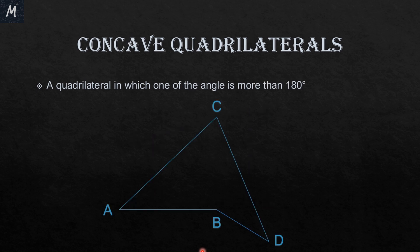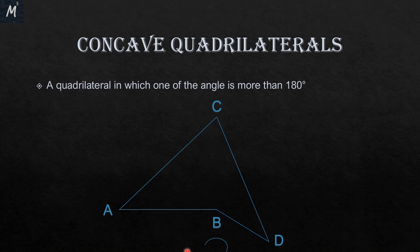The next type is a concave quadrilateral. It is a quadrilateral in which one of the angles is more than 180 degrees. In this figure, which is the figure of a concave quadrilateral, we can see that angle B is more than 180 degrees — that is why it is a concave quadrilateral. The question arises: why only one angle is more than 180 degrees?